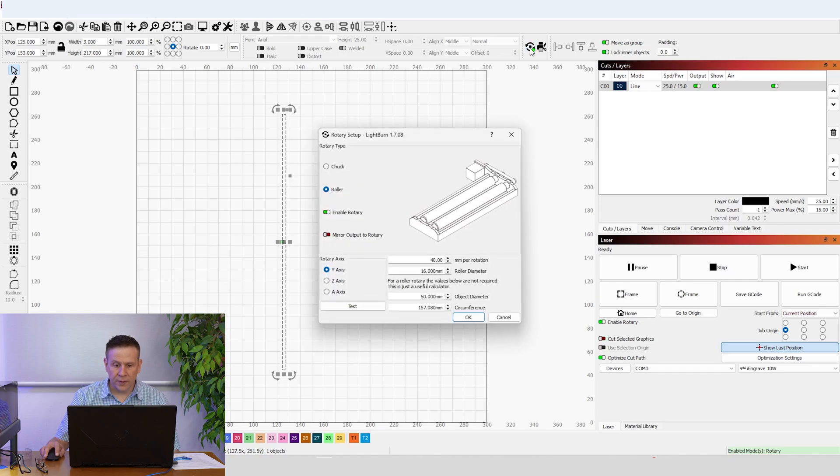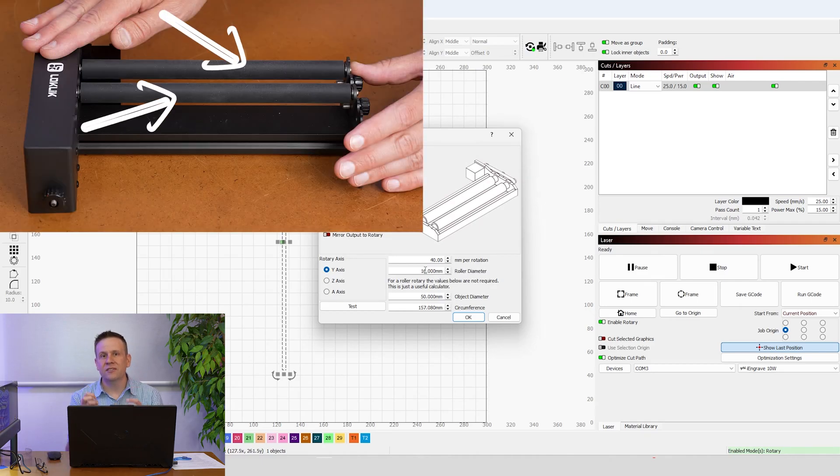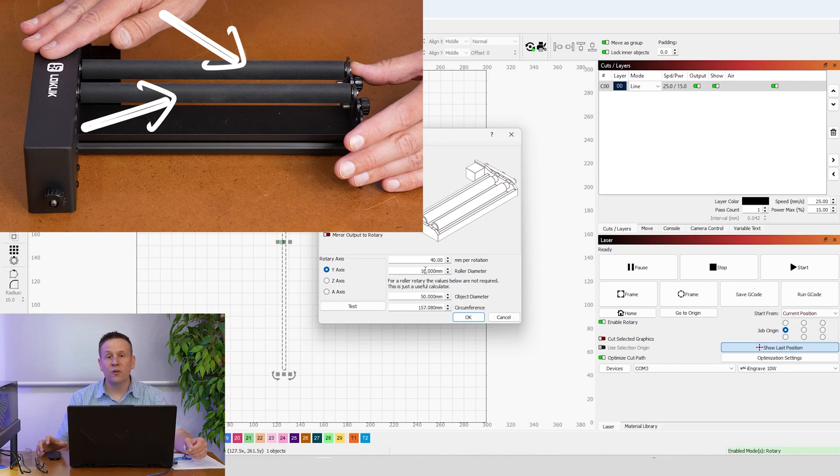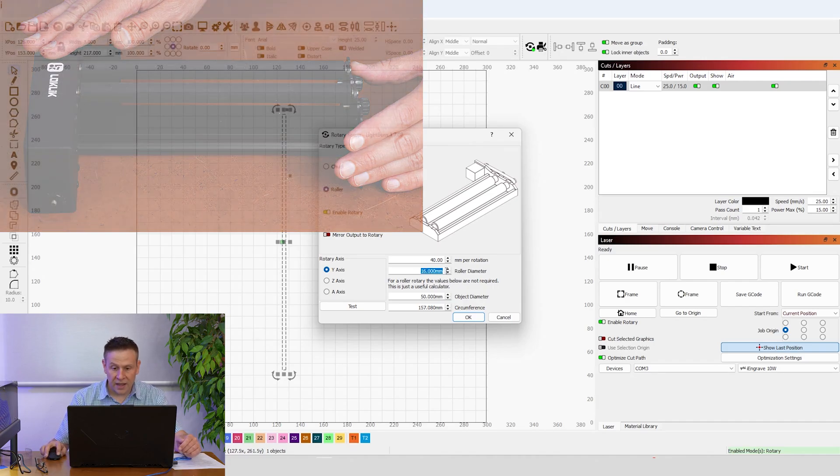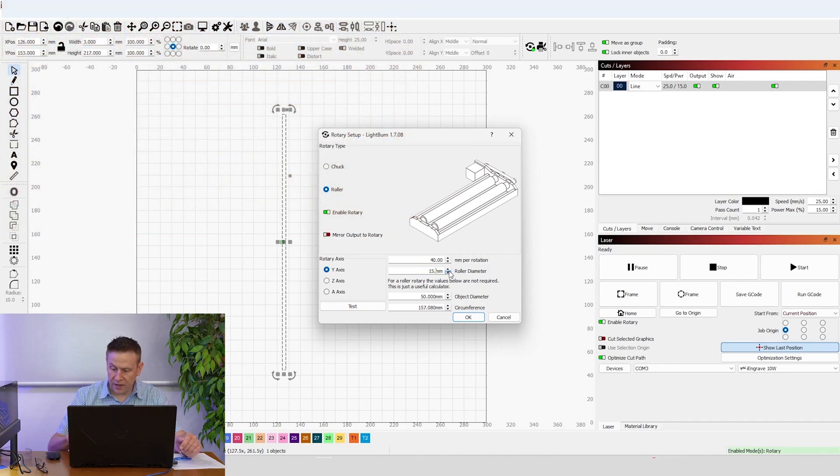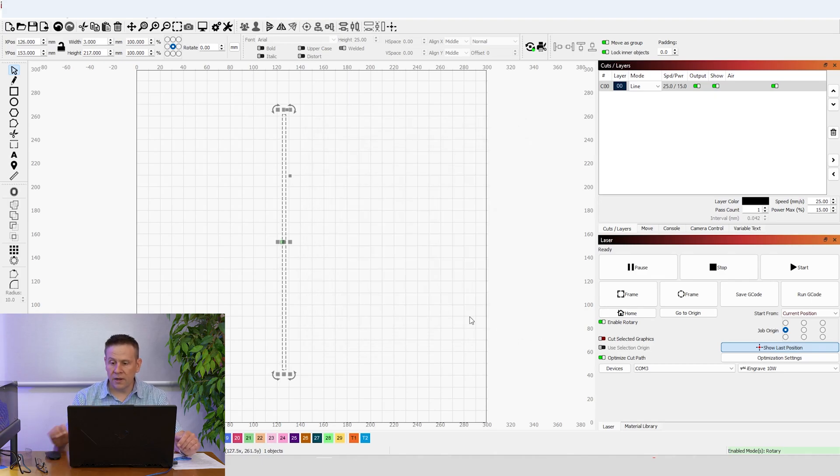I go back to rotary setup and the roller diameter. That typically is a nominal distance that we put in there and during the manufacturing process and the squishiness of that rubber. Sometimes it's not exactly what it is advertised. I'm going to put in 15.5 millimeter roller diameter. We'll do another test engraving and see if we can't get the ends of that test box to meet up perfectly.